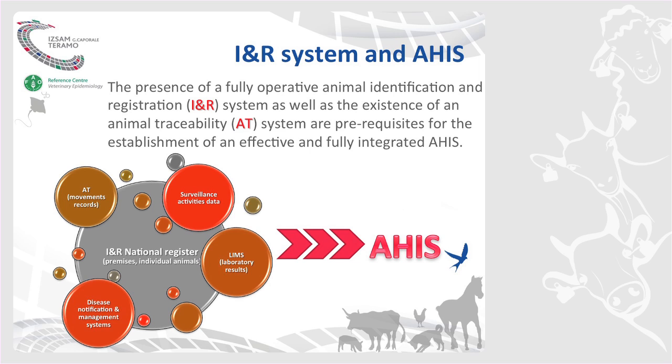Any strategy of animal disease prevention and control would be difficult to implement without an animal health information system. The pre-requisite for the animal health information system is surely the existence of animal identification and recording systems and animal traceability. All these systems could be the basis, the pillars for any animal health information system, and in particular the identification registration system.